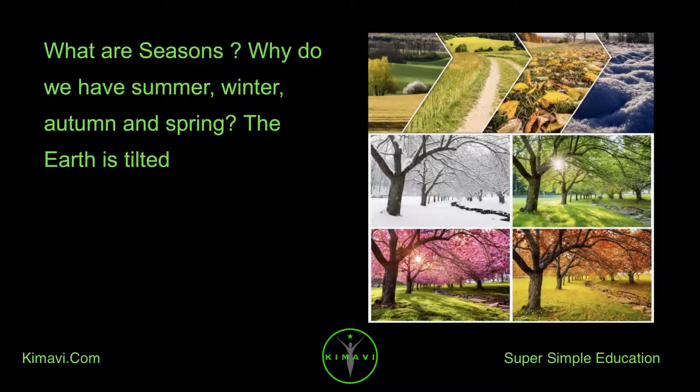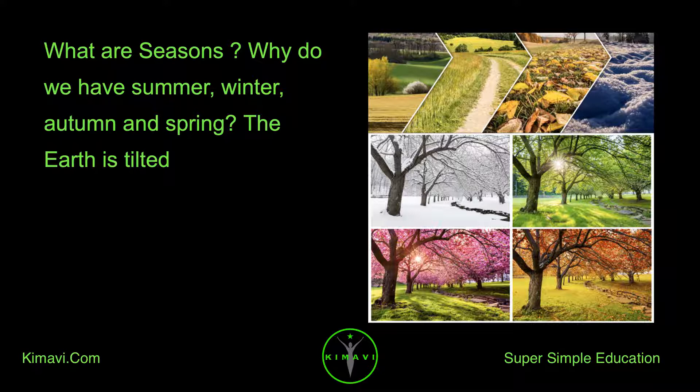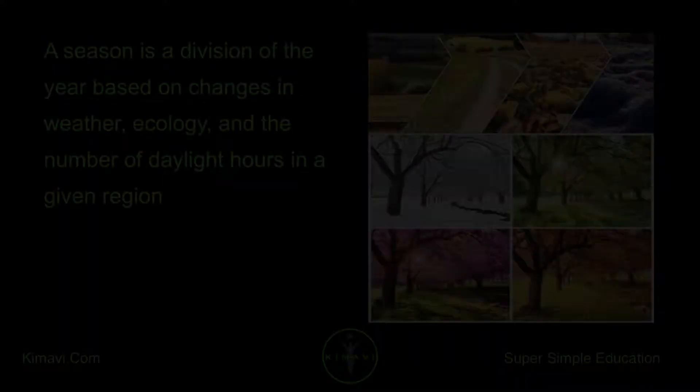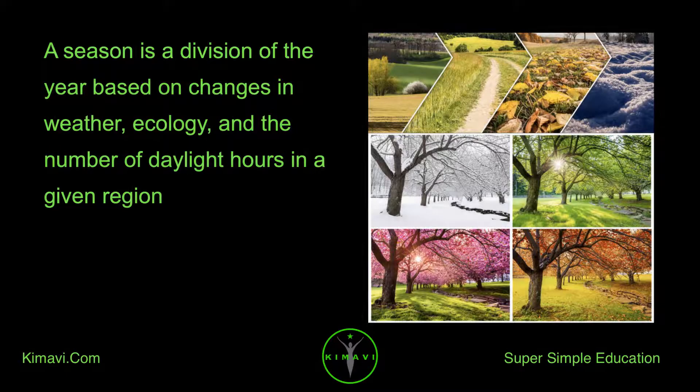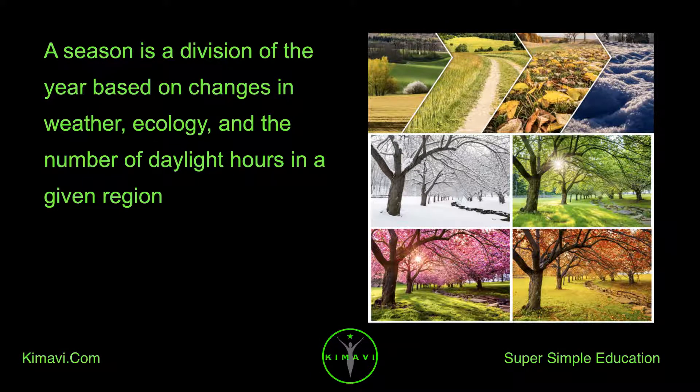What are seasons? Why do we have summer, winter, autumn, and spring? The Earth is tilted. A season is a division of the year based on changes in weather, ecology, and the number of daylight hours in a given region.